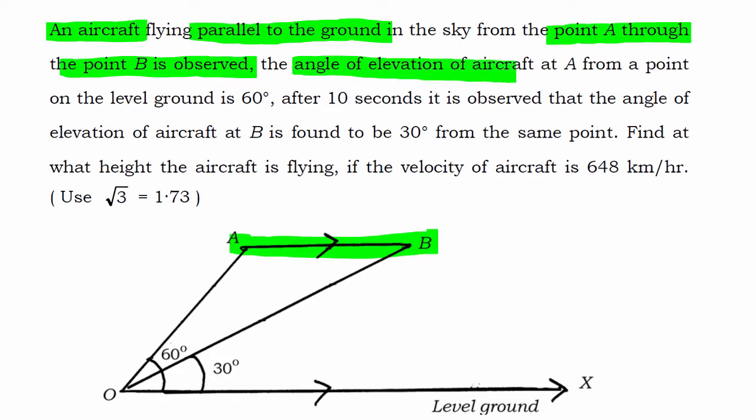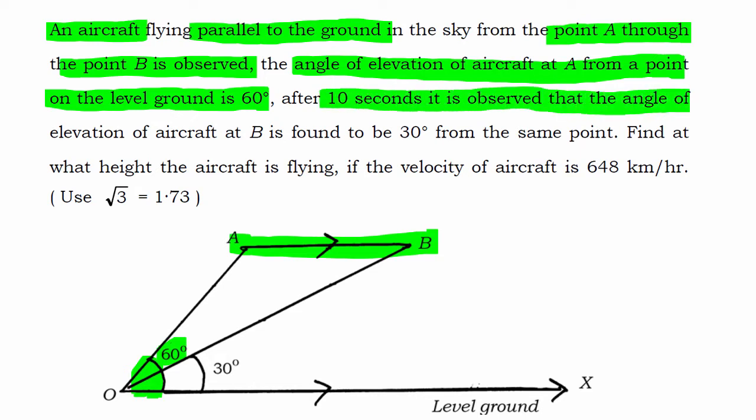The angle of elevation at A from a point on the level ground is 60 degrees. After 10 seconds it is observed that elevation at B is 30 degrees. So after 10 seconds it reaches B and at that point the elevation is 30 degrees.